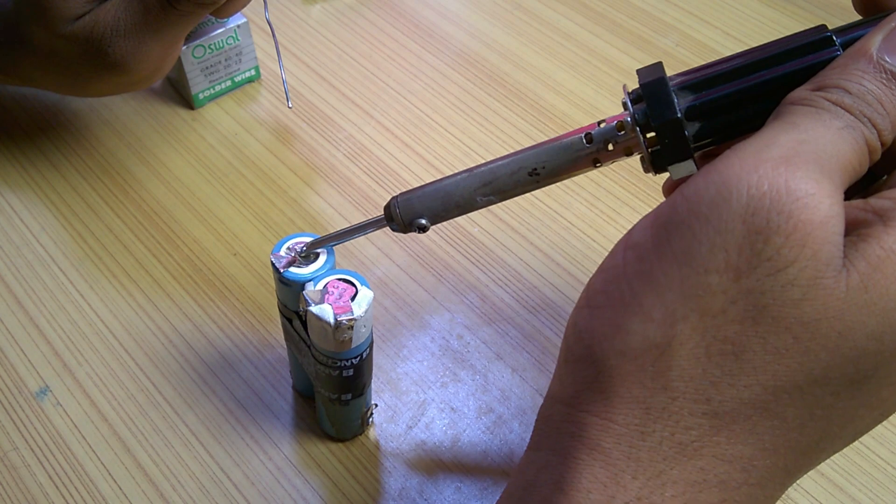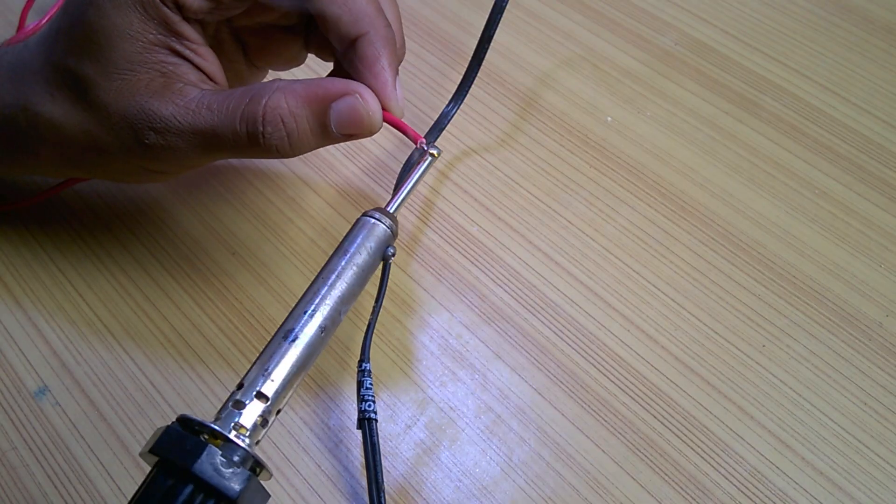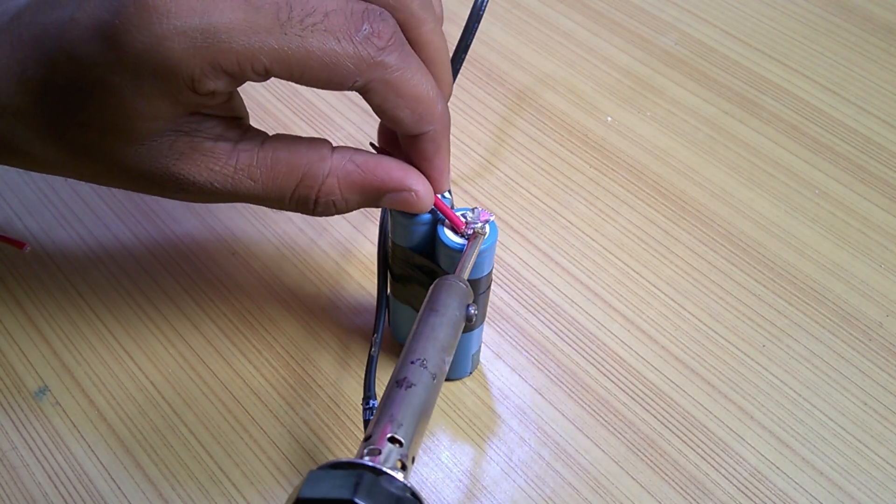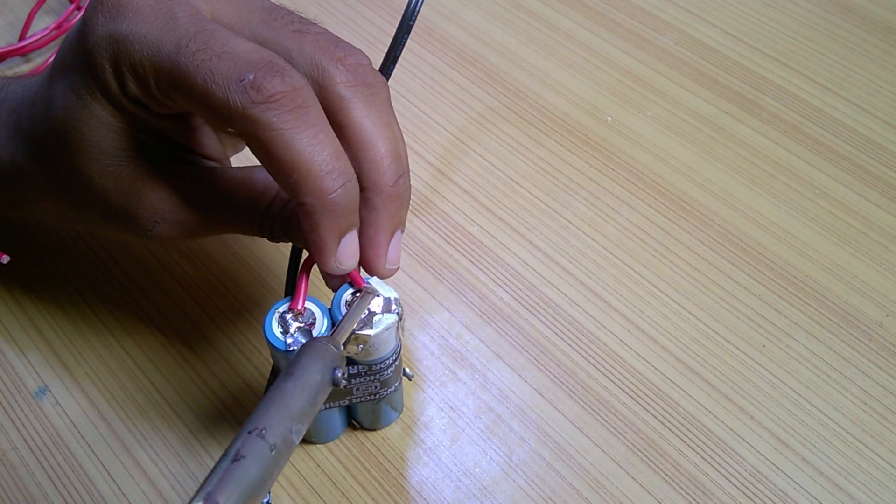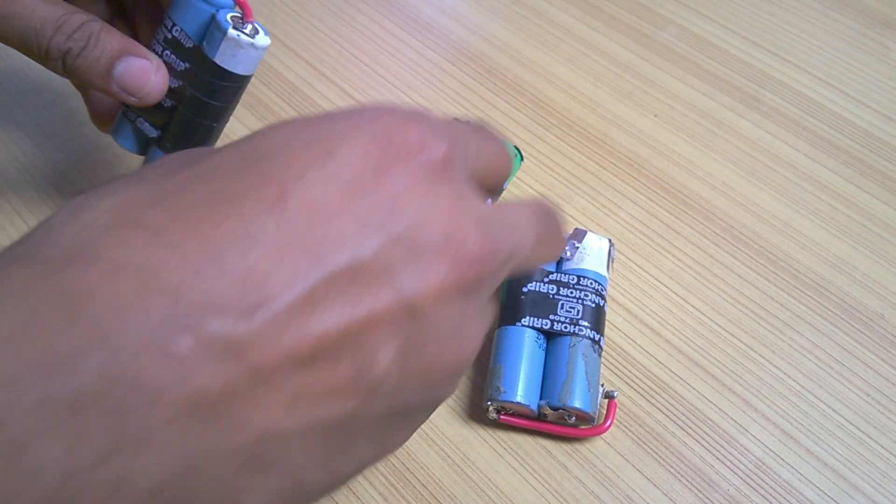I applied solder to each terminal of each cell so that I can easily solder wire to them. Using a 1.5mm square wire, I joined the positive to positive and negative to negative of the batteries so that they are connected in parallel. And I did the same to the other four batteries.